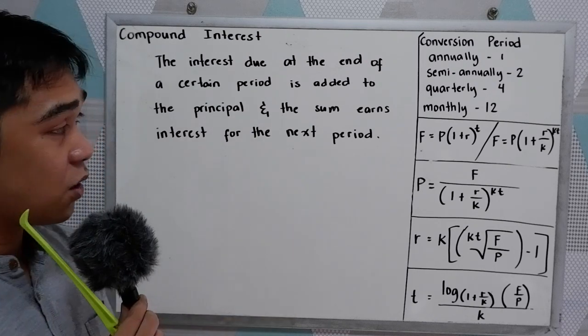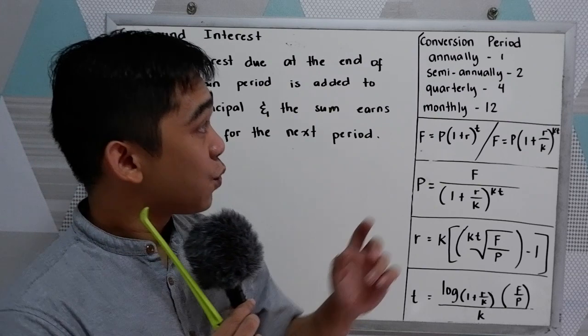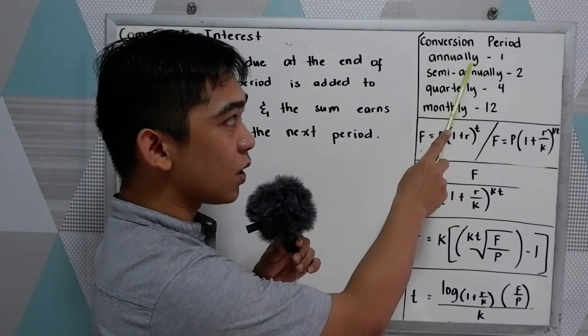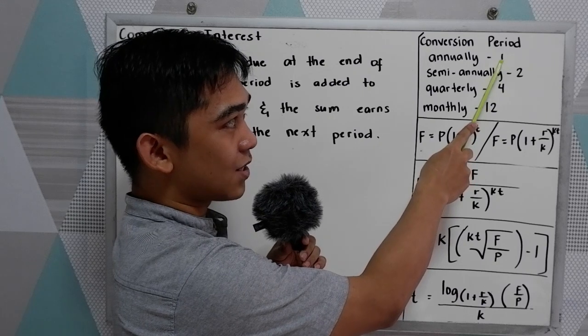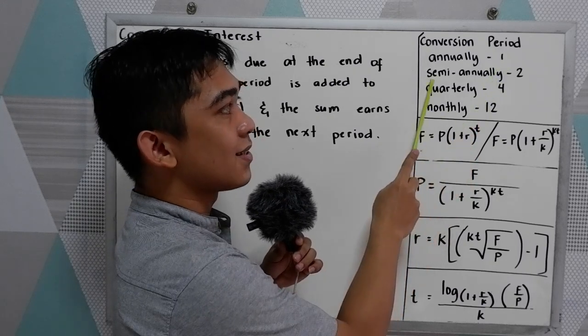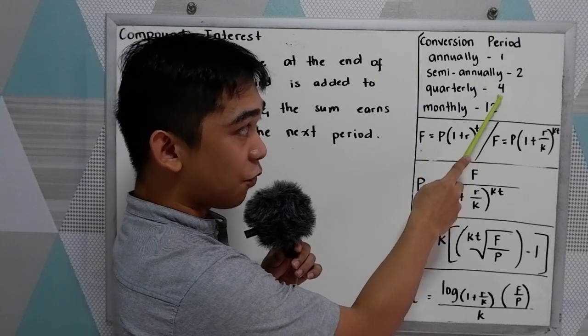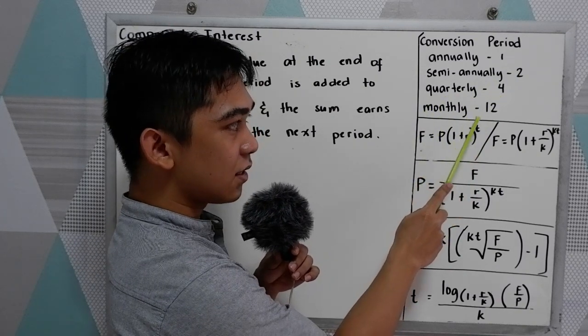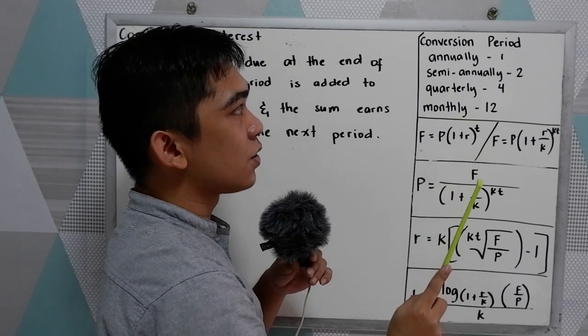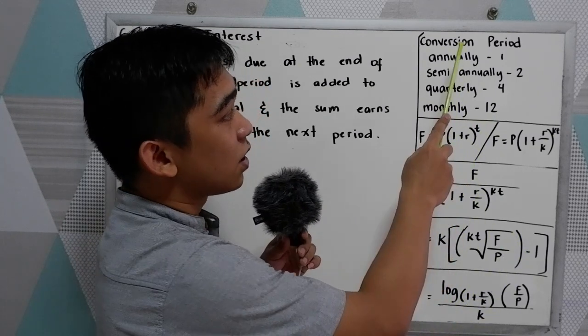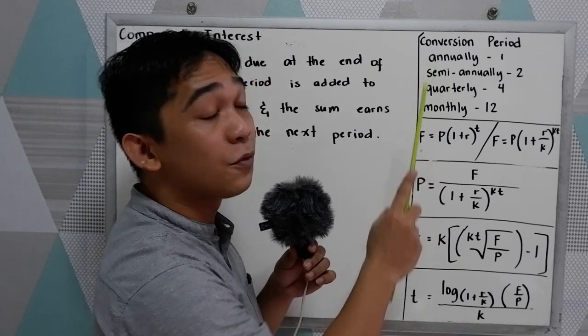These are the following that you need to know. Here we have the conversion period. You will encounter annually, that is equal to 1; semi-annually, 2; quarterly, that is 4; monthly, that is 12. We're going to use K as our conversion.